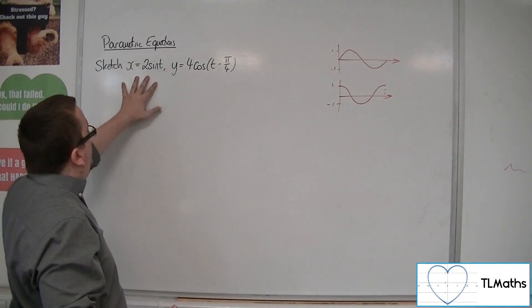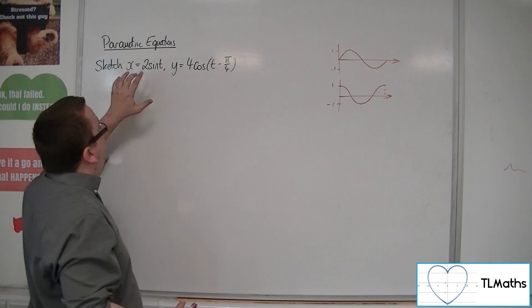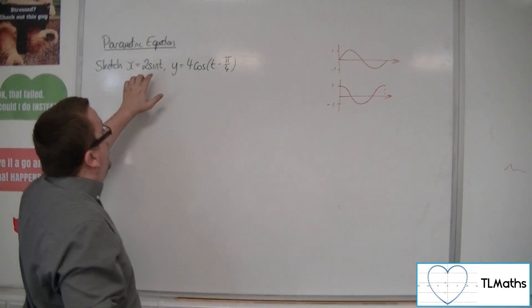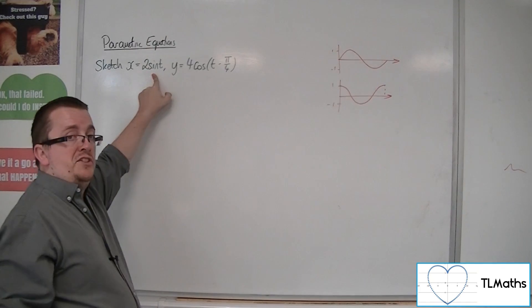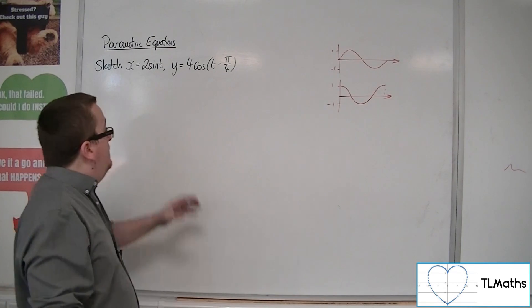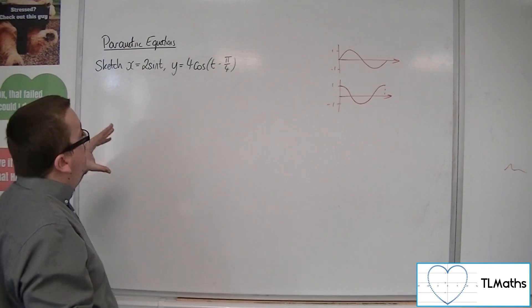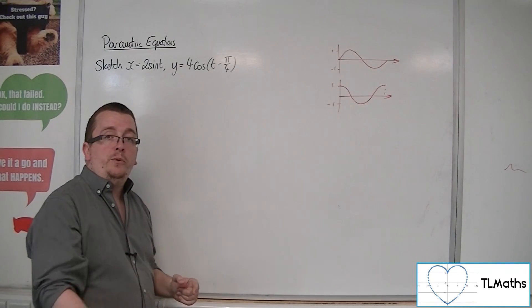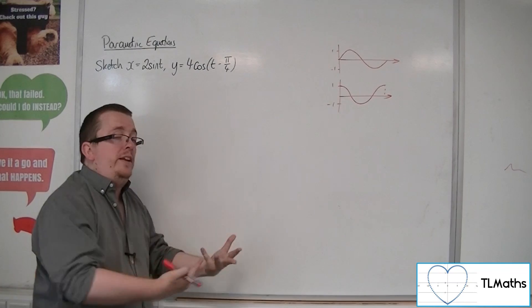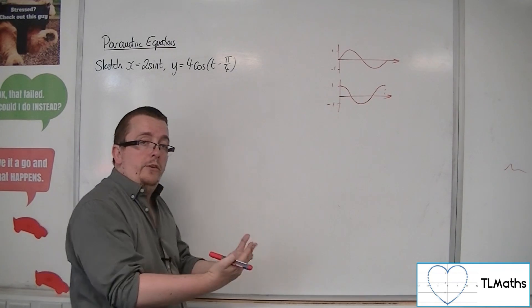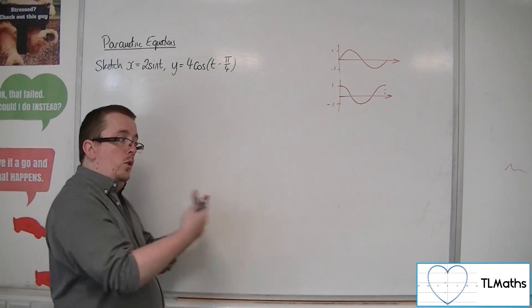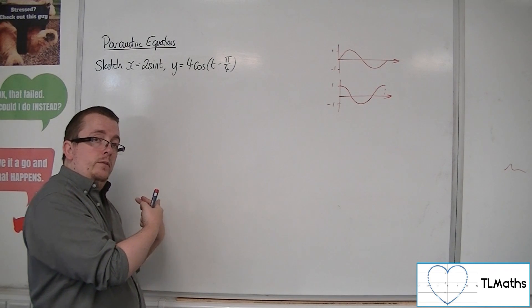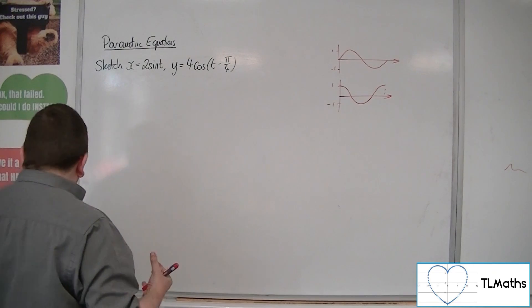So this curve cannot go beyond 2 and minus 2 on the x-axis, because sine t is fixed between minus 1 and 1. So two lots of it must be between minus 2 and 2. The curve doesn't exist when you go past 2 or that way with minus 2. So it is restricted.